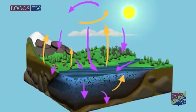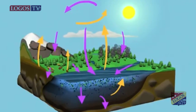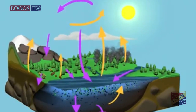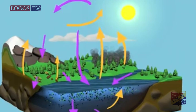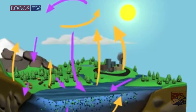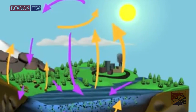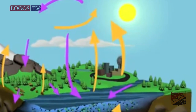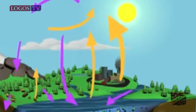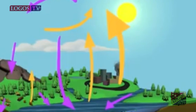Some human activities, such as burning fossil fuels and clearing forest land, contribute to the release of carbon dioxide into the environment, becoming in this case a source of pollution.